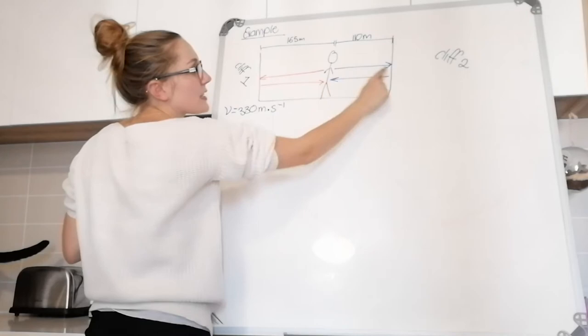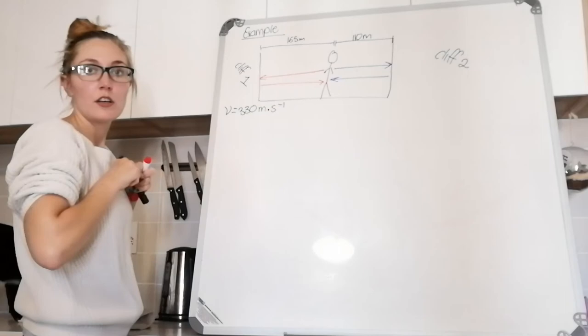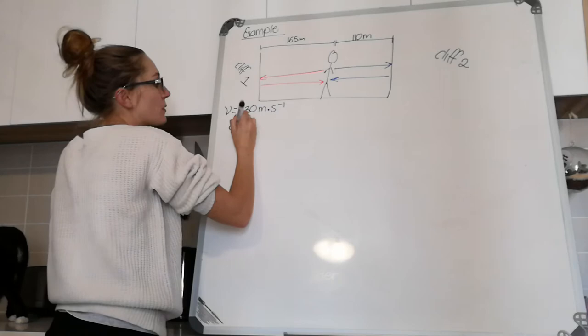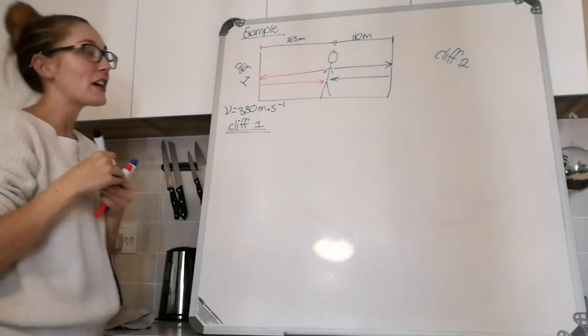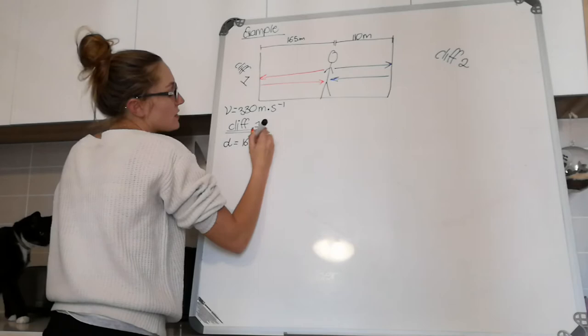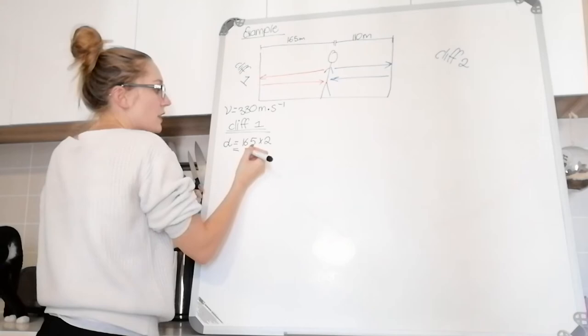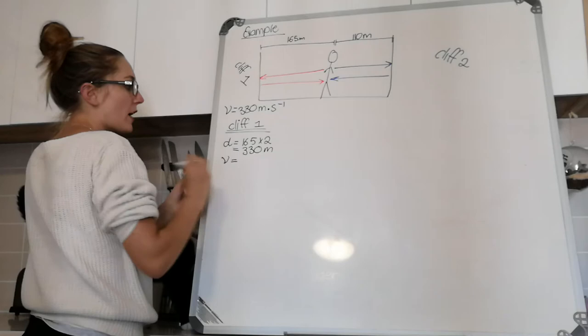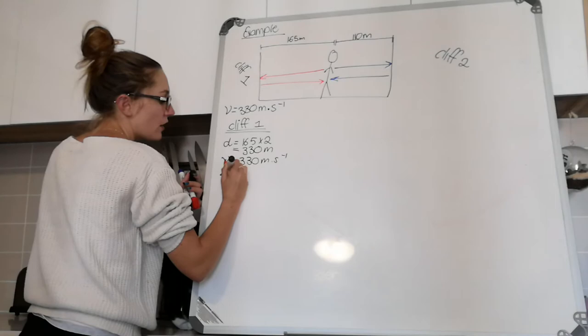First off, the total distance our clap has to travel to get to cliff one and back is actually 165 times two. So let's start with cliff one, and remember in physics you always list the information you know. For cliff one, our distance is 165 times two—it has to get there and then back—which is going to be 330 meters. We know that the velocity or the speed of our wave is 330 meters per second, and we want to know how long is that going to take.